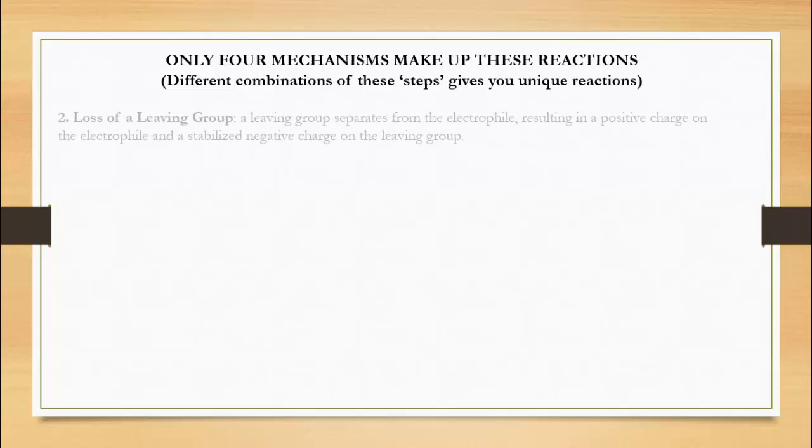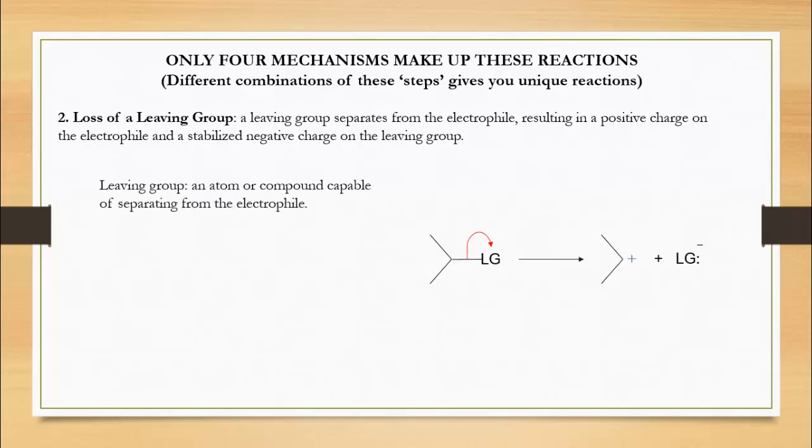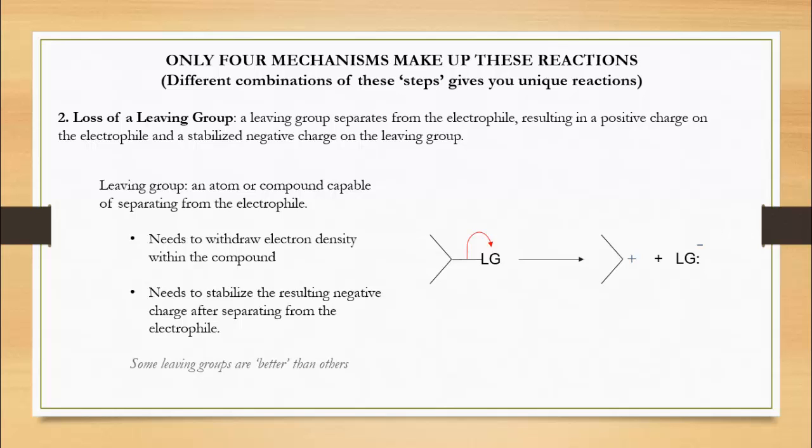The next mechanism is the loss of a leaving group, which you can think of as the loss of electron density. This explains the resulting positive charge on what's left of the original compound, which can now act as an electrophile in the preceding step. A leaving group is an atom capable of separating from the electrophile. In order to do this, it needs to withdraw electron density within the compound, and it needs to be able to stabilize this extra electron density once it leaves, which results in a negative formal charge.